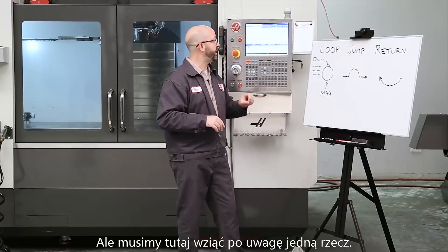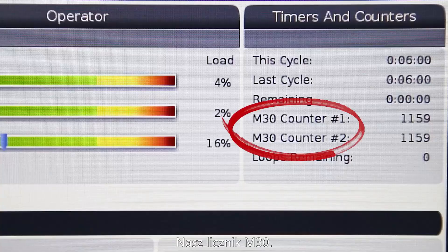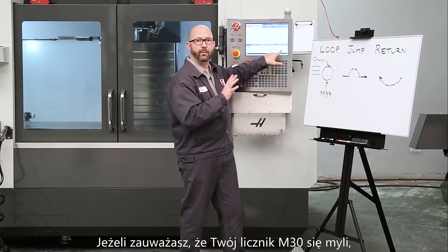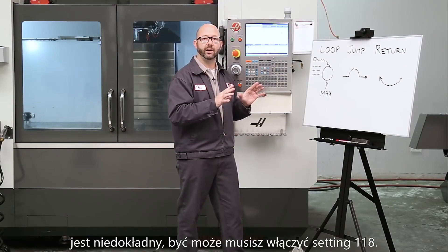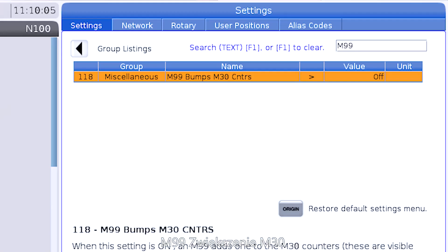Now, there is one thing to consider here: your M30 counter. If you think that your M30 count is off or inaccurate, you might need to turn on setting 118. That's M99 bumps M30 counters.